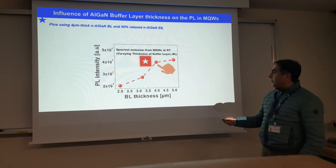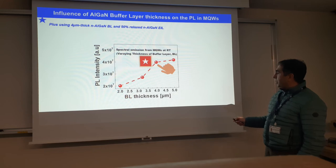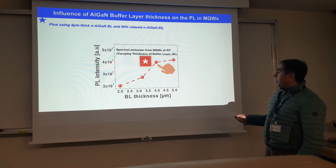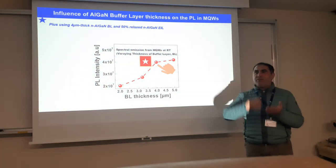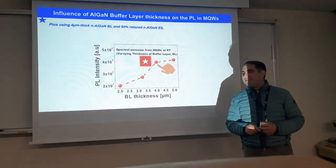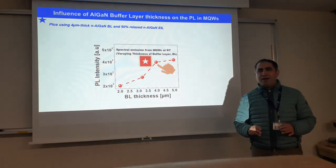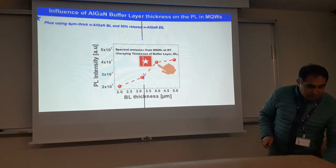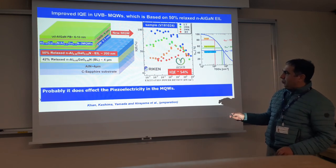Here is the PL intensity photoluminescence from the AlGaN layer and the thickness. As the thickness increases, the PL intensity increases. At 5 microns we got very high PL intensity, but we found some cracks on the surface. So we found that 4 microns is the most optimized buffer layer thickness.